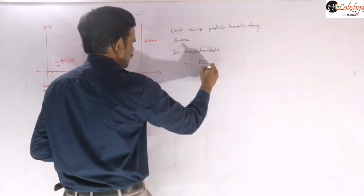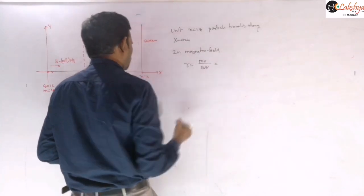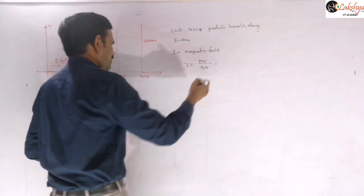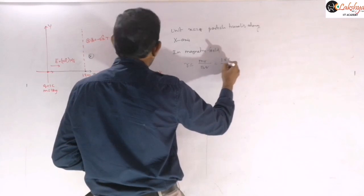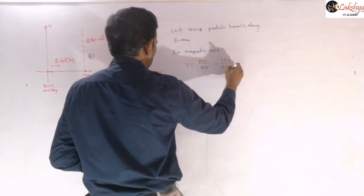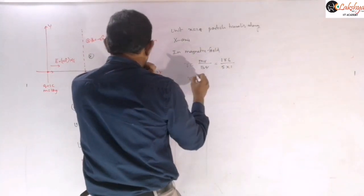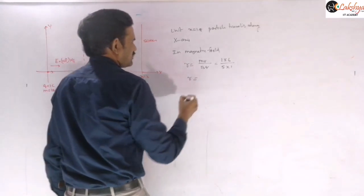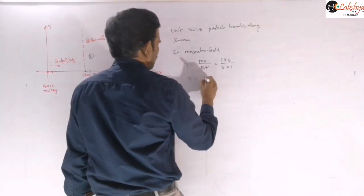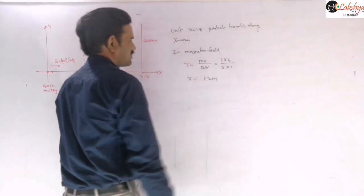The radius in the magnetic field is r = mv / (qB) = (1 × 6) / (1 × 5) = 1.2 meters.